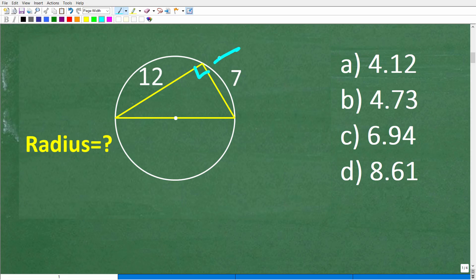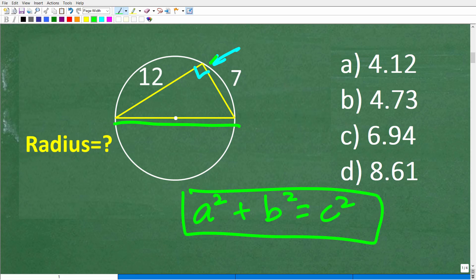I'm going to show you why this is a right triangle. If this is a right triangle, and we're looking for the radius, which is this part right here, what we can do is find the hypotenuse of this right triangle. Because we have two sides out of the three sides in a right triangle, we can use the Pythagorean theorem: A squared plus B squared equals C squared.